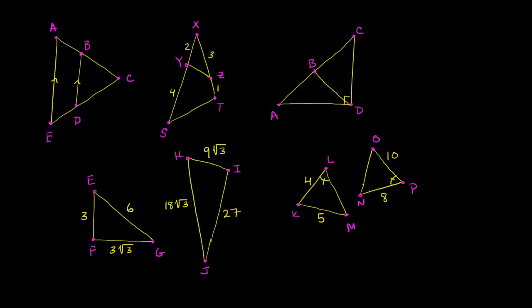What I want to do in this video is see if we can identify similar triangles and prove to ourselves that they really are similar using some of the postulates that we've set up. So over here I have triangle BDC inside of triangle AEC. They both share this angle right over there, so that gives us one angle. We need two to get to angle-angle, which gives us similarity.